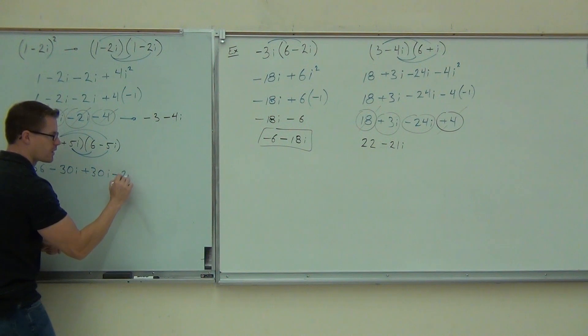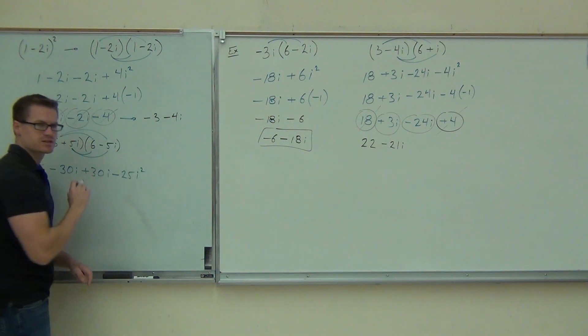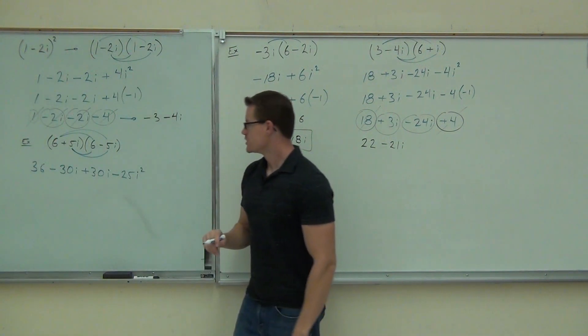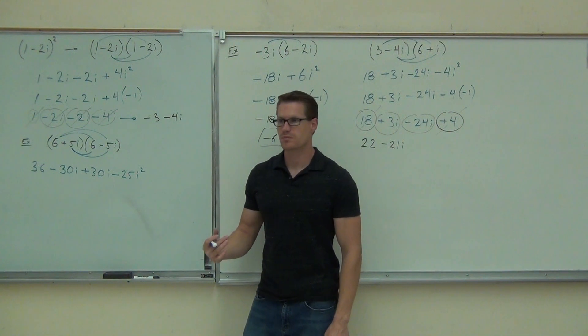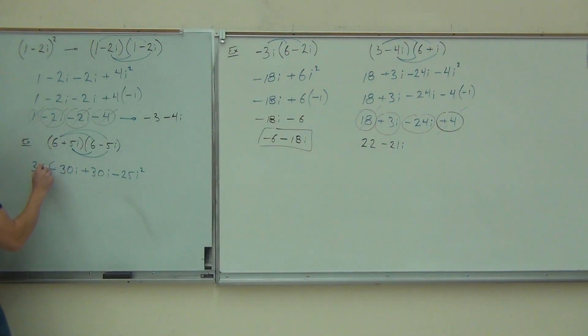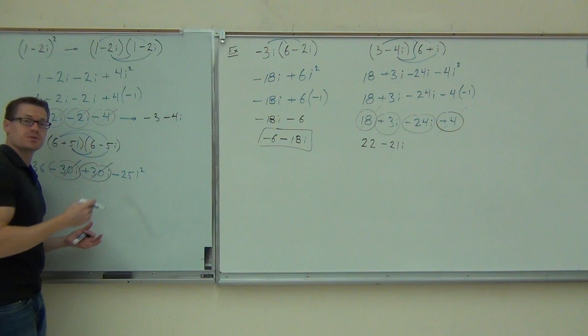Minus 25i squared. Great. Positive times a negative, that's a negative. I'll write minus 25i squared. Don't forget that i squared, that's going to change your problem, right? Do you see anything interesting that's going to happen? Yeah, they do. I've got minus 30i, I've got plus 30i.